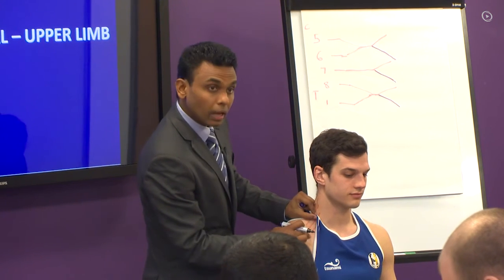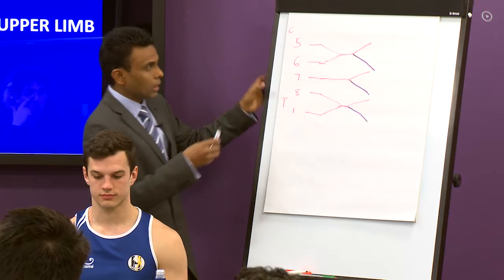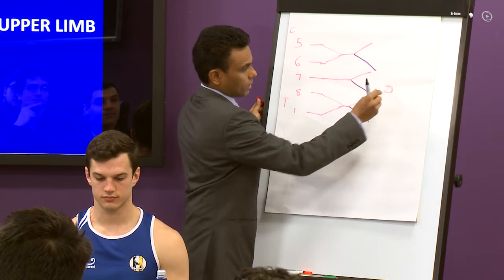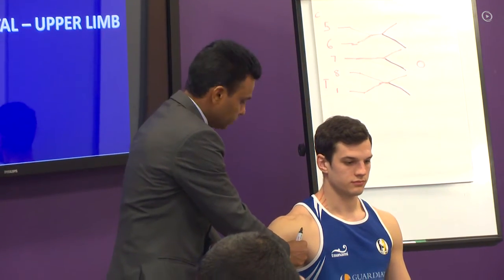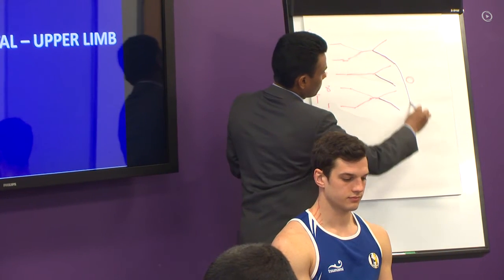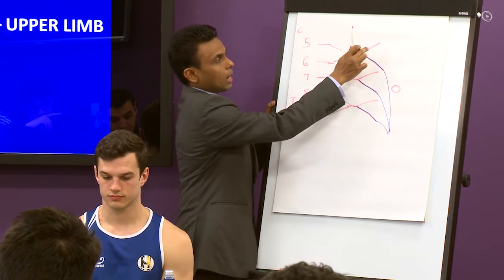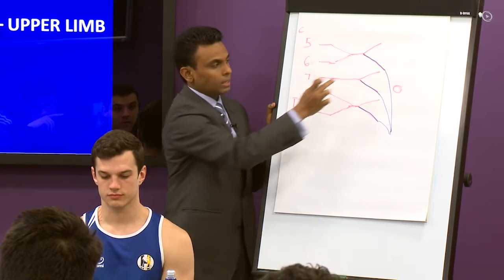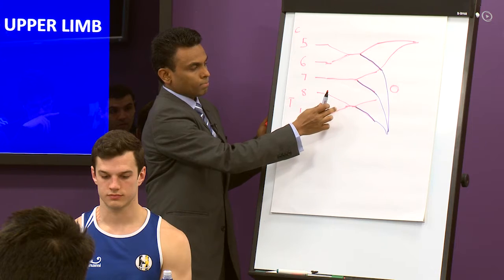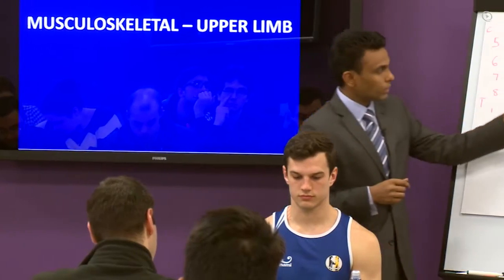Because the divisions lie behind the clavicle, a clavicular fracture can affect the divisions. These divisions then form the cords in relation to the axillary artery. All posterior divisions unite to form the posterior cord, which lies posterior to the axillary artery. The anterior divisions of the upper and middle trunks form the lateral cord.